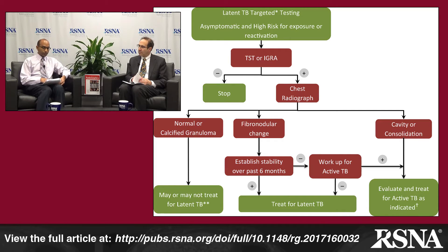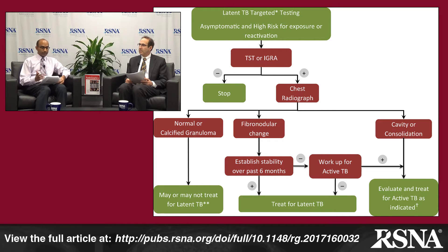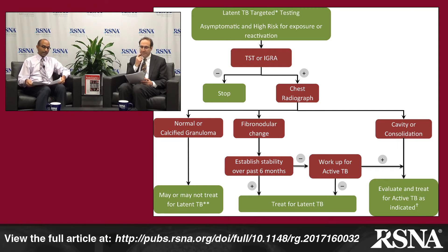It's important to recognize the slight differences in management across the three legs of the algorithm. The first leg on the left is the normal or calcified granuloma. If the chest x-ray is normal or shows just a calcified granuloma or calcified lymph node, the clinician may or may not treat for latent TB. The time when they may decide to treat is if the patient has a high risk factor specifically for reactivation — not just exposure, which brought them into the algorithm.